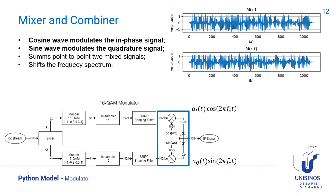The mixer and the combiner are the last blocks of the modulator. The mixer takes a cosine wave and modulates the in-phase signal, and a sine wave to modulate the quadrature signal.